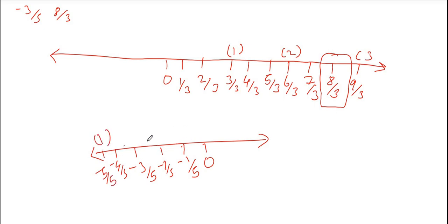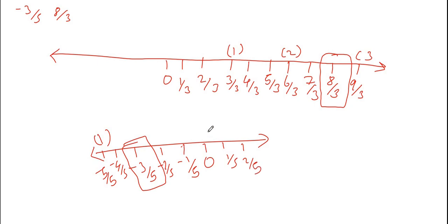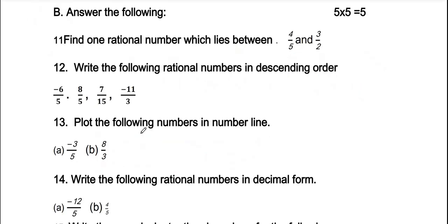You can put minus 3/5, which is the same. Okay, 1/5 and 2/5 — which is the same. That's it. So this is how you can plot it on the number line.